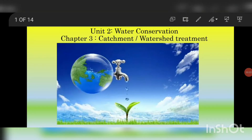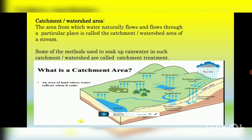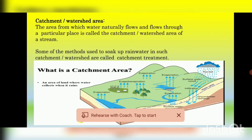Unit 2, Water Conservation, Chapter 3: Catchment or Watershed Treatment. The catchment or watershed area is the area from which water flows naturally to a particular place. The methods used to soak up rainwater in such catchment or watershed areas are called catchment treatment.